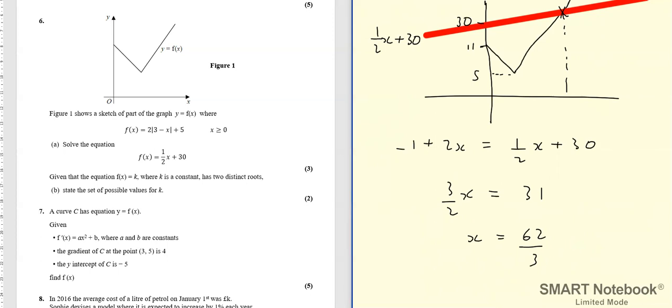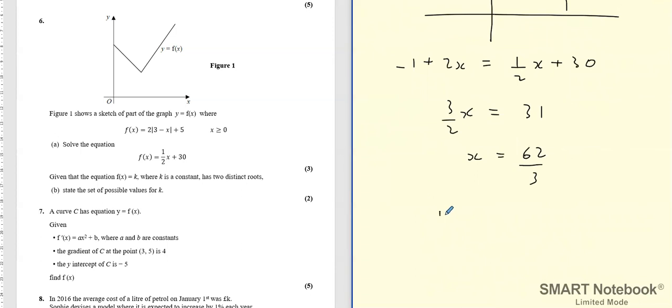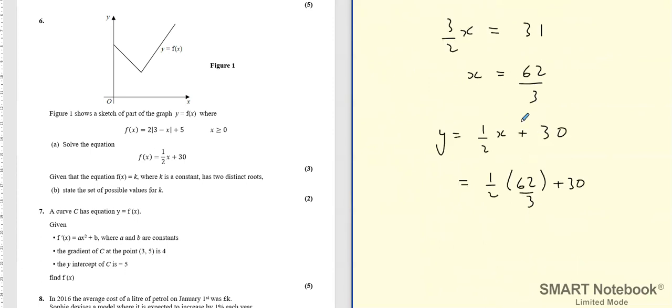There is our solution. We could work out the y coordinate as well. We could say y equals a half x plus 30. So what we're going to do is do a half times by 62 over 3 plus 30, not that we need to because we've already solved the equation. We found that x coordinate. This is optional by the way, I'm just showing you the coordinates of where they intersect.